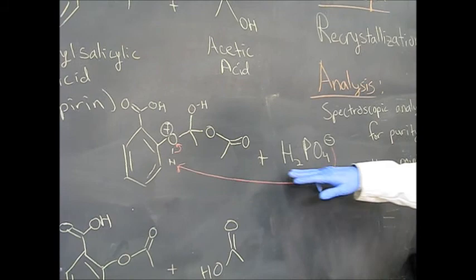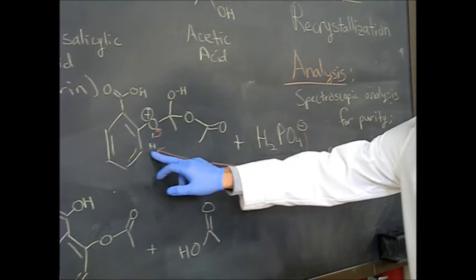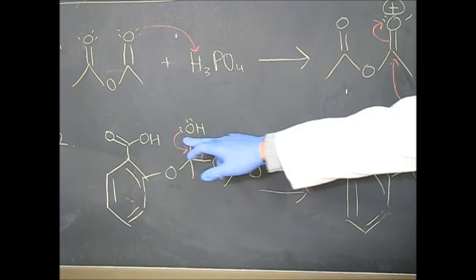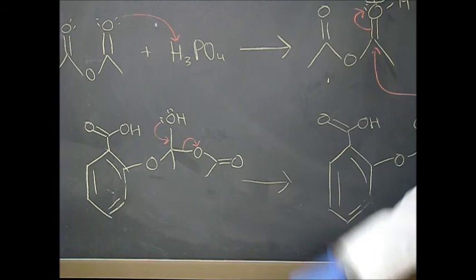So next what's going to happen is the conjugate base of our phosphoric acid is going to deprotonate this oxygen right here. This will reform the catalyst and satisfy that positive charge. Next what's going to happen is this pi-lone pair is going to re-collapse and kick up this acetate leaving group.